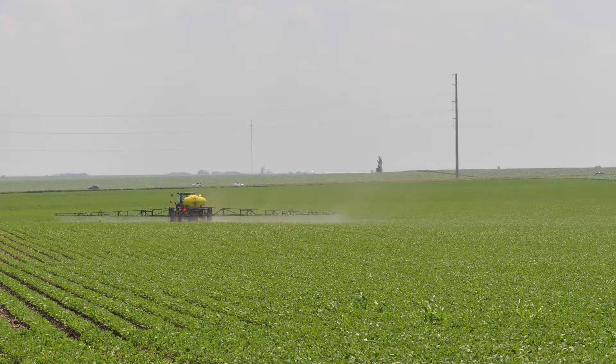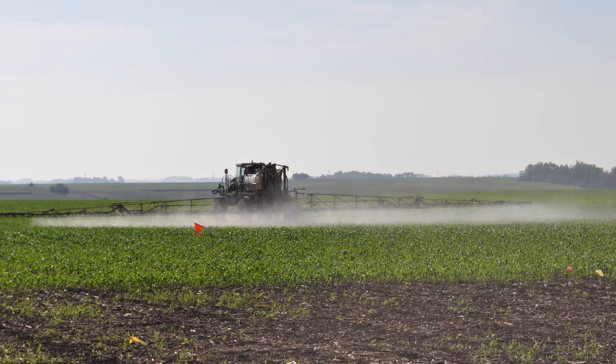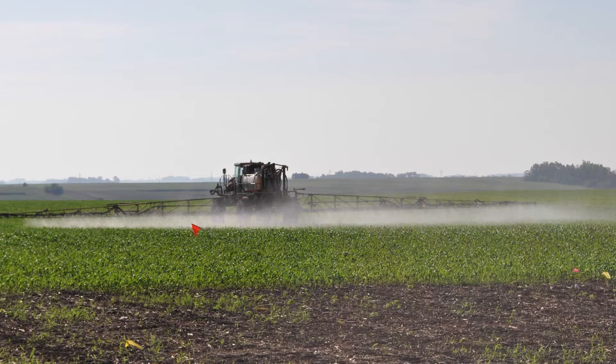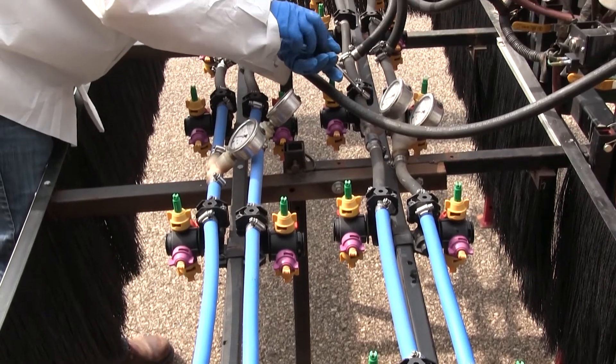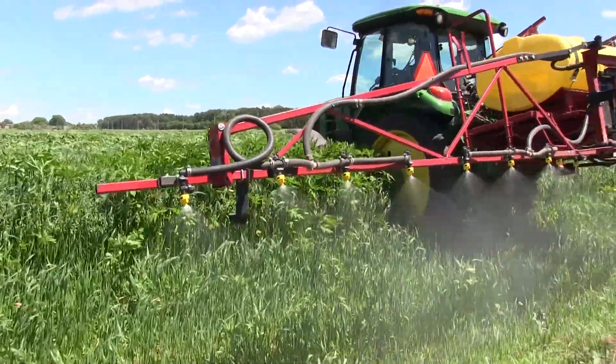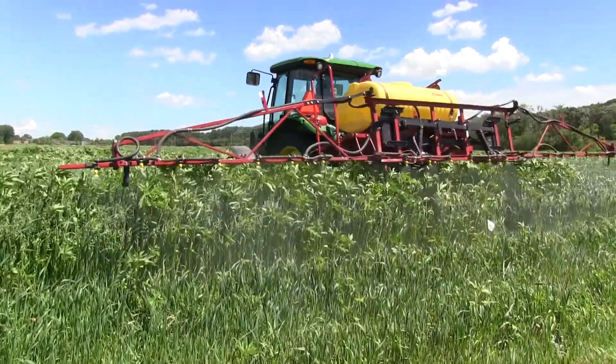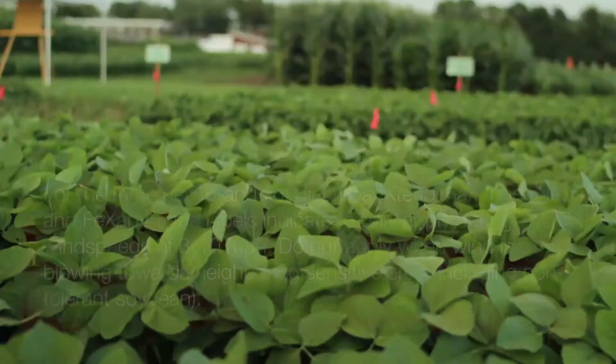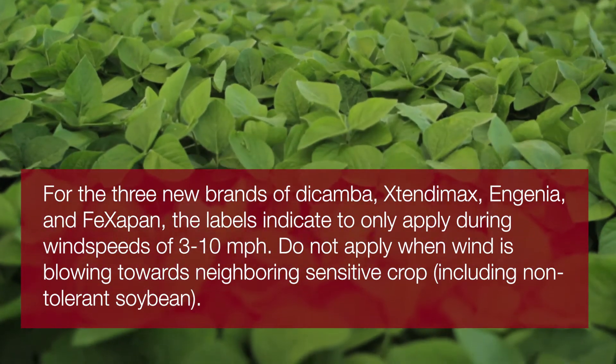With growth regulator herbicides, there are many specific instructions on how to apply these compounds because of the sensitivity of many crops. Breaking it down, there are many ways for things to go wrong. One is you have to be aware of off-target particle drift, so there's a lot of emphasis on nozzle type listed on the label. Coarser droplets are recommended, and wind speed should ideally be between 3 and 10 miles per hour, though some labels go up to 15 miles per hour.